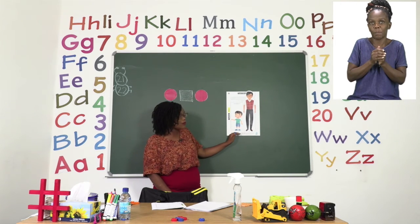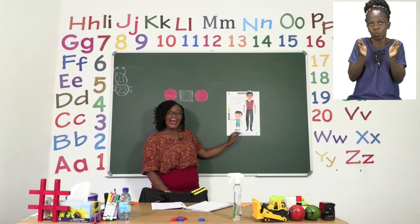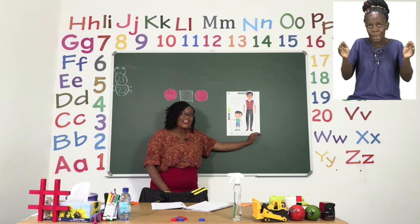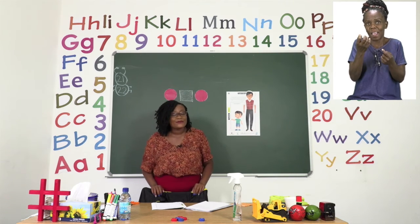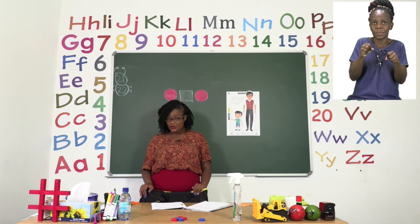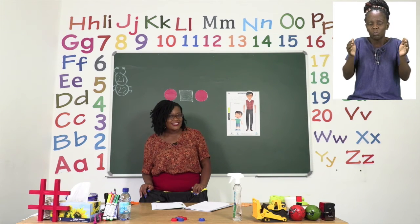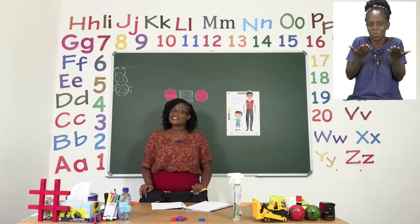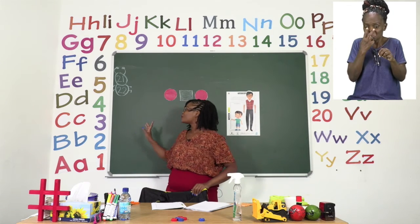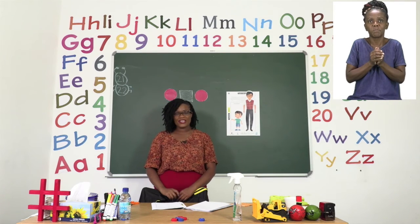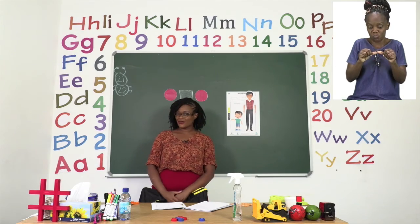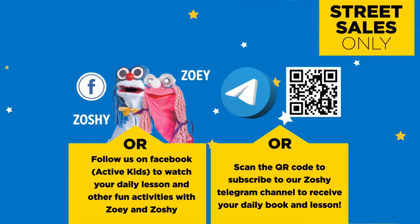Let us say small and big. There are many things that can be big and small and I want you to try and find them in your classroom or in your house. Take your time, especially when you are cutting or drawing your pattern, and I will see you just now, my friends, after this short advert break. Follow us on MyZone Facebook Active Kids to watch your daily lesson and other fun activities with Zoe and Zosie.